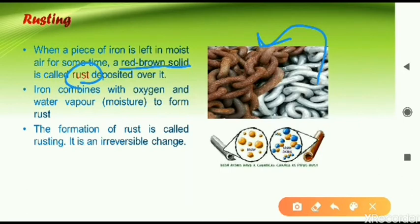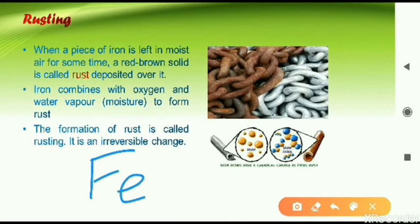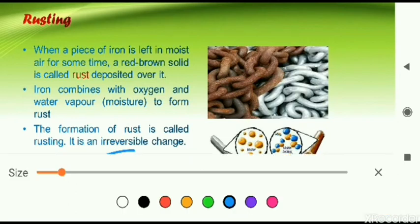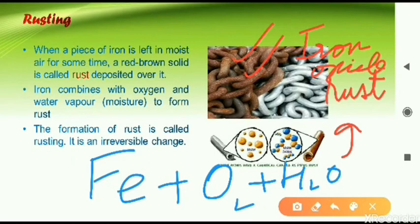Rusting takes place when iron metal combines with oxygen and water vapor. In chemical symbols: Fe (iron) combines with oxygen of the air and water vapor of the air. Two conditions are required for rusting: the iron object should have contact with moisture as well as oxygen gas. As a result of this reaction, a reddish-brown solid forms — that is called rust, or in chemical formula, iron oxide. You can see this reddish-brown solid in the photograph.